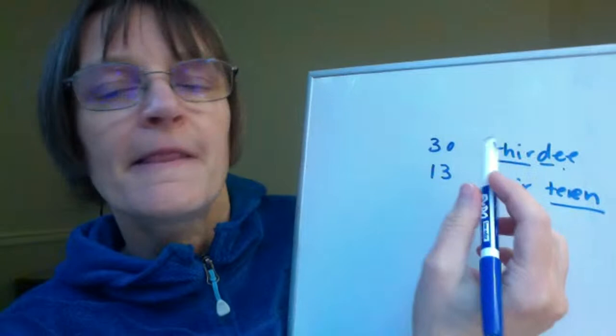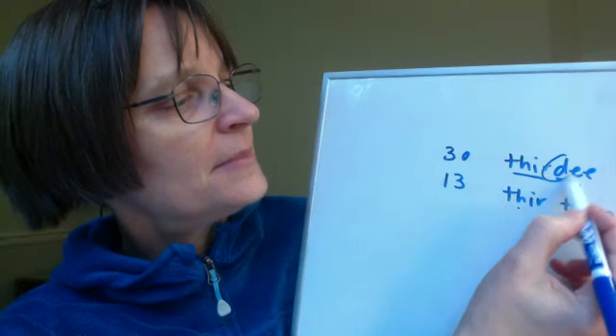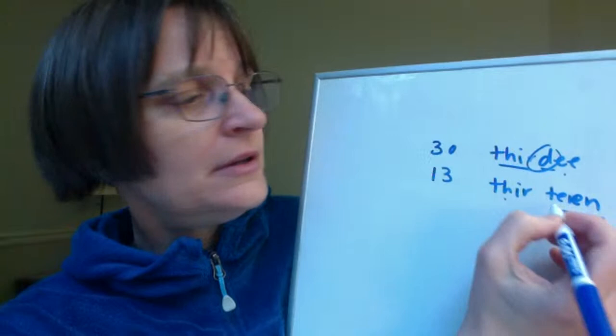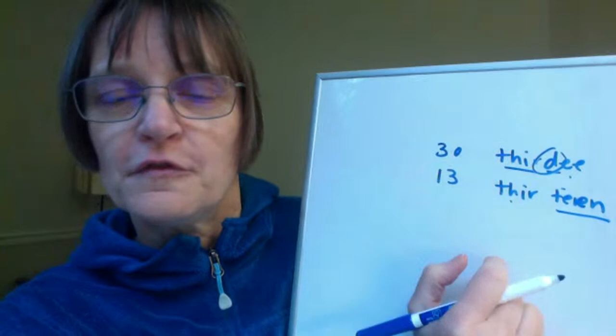Secondly, in 'thirty' my T becomes a flap and sounds more like a D, but in 'thirteen' — since this is a stressed syllable — I'm going to use an actual T: 'thirteen.' That happens also for forty/fourteen and fifty/fifteen. If you're interested in finding out more about numbers, on the free practice site you can use the search box and just type in 'numbers' to find related lessons.